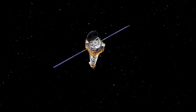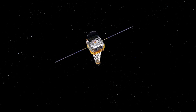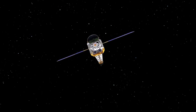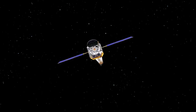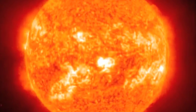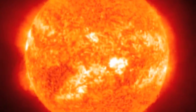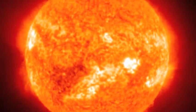One method is called the transit method. We point our telescope at a star and wait to see if it gets any dimmer. If the star does get dimmer, it means that a planet is passing in front of it and blocking some of the light.